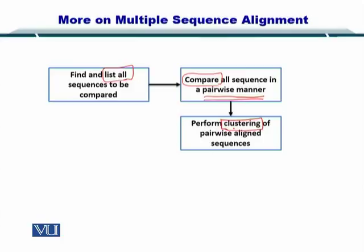Clustering is essentially a strategy to make pairs of the most similar sequences. You form pairs of sequences that are most similar to each other. For example, if you have four sequences, the two sequences that are closest will form the first pair, and the other two sequences that are more similar to each other will form another pair. This process is called clustering.